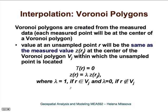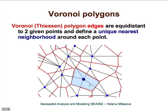How can we use this for gridding? We assign every grid point within the neighborhood of each measured point the same measured value. The value at an unsampled point R will be the same as the measured value at the center of the Voronoi polygon within which the unsampled point is located. So if we have a grid point here, its value will be the same as the value of the point at the center of this polygon.